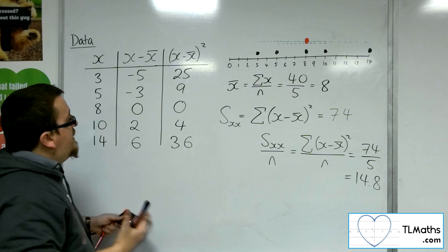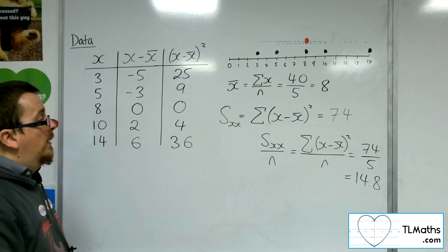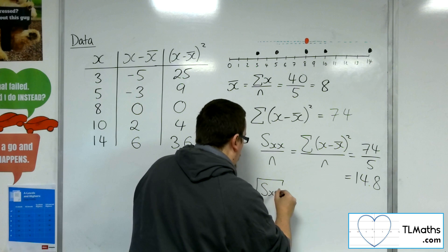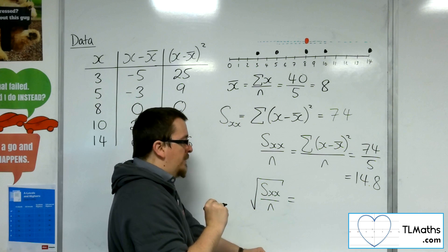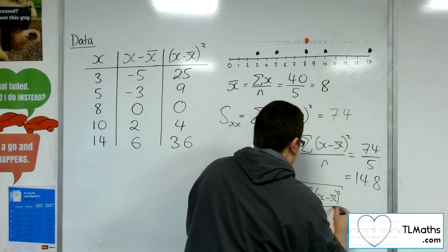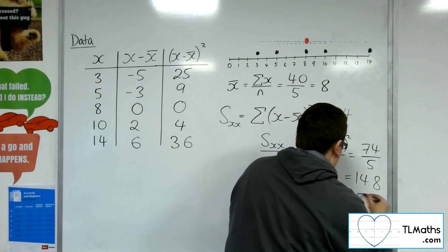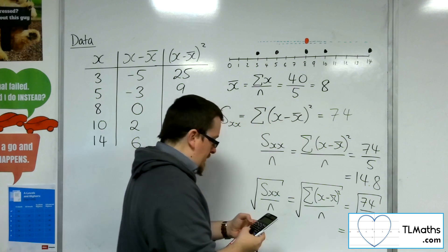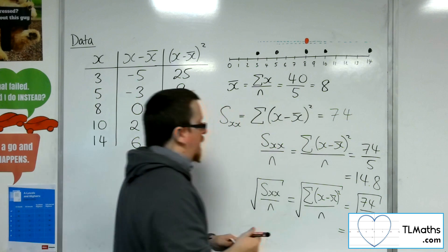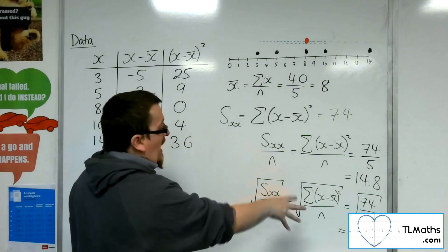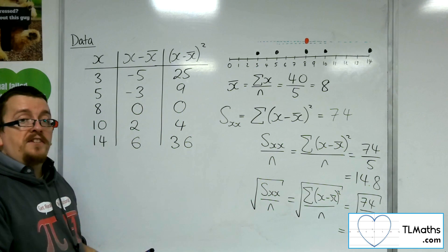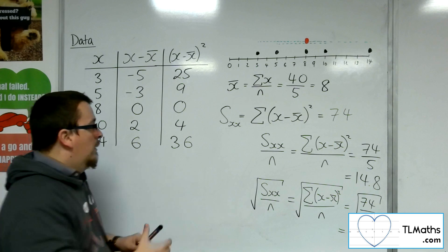So I need to go back on myself and square root. So what I really need is the square root of all of these, SXX divided by n. So the square root of the sum of the x minus x̄ squared over n. So the square root of 74 over 5, or square root of 14.8, gets me 3.85 to 3 sig fig, which is definitely better. That makes a whole lot more sense.